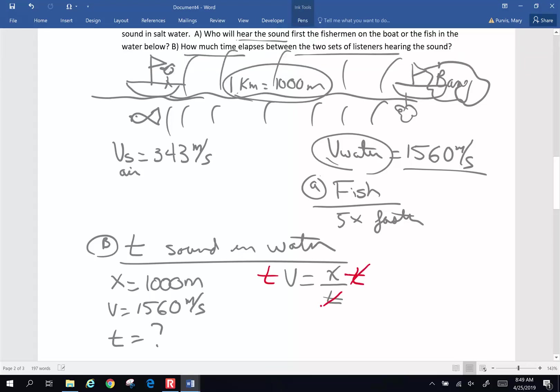Divide both sides by V to get rid of that velocity. So time is going to be X over V. So time is going to be 1,000 meters divided by 1560 meters per second. Grab a calculator here. So 1,000 divided by 1560. I get 0.641.